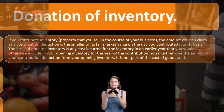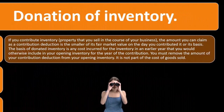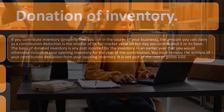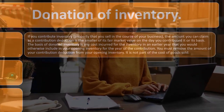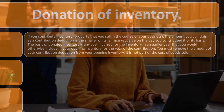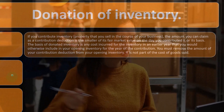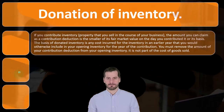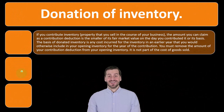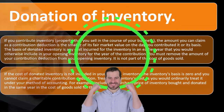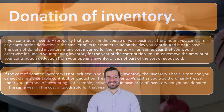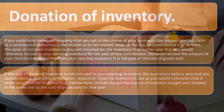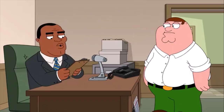The basis of donated inventory is any cost incurred for the inventory in an earlier year that you would otherwise include in your opening inventory for the year of the contribution. You must remove the amount of your contribution deduction from your opening inventory — it is not part of the cost of goods sold.